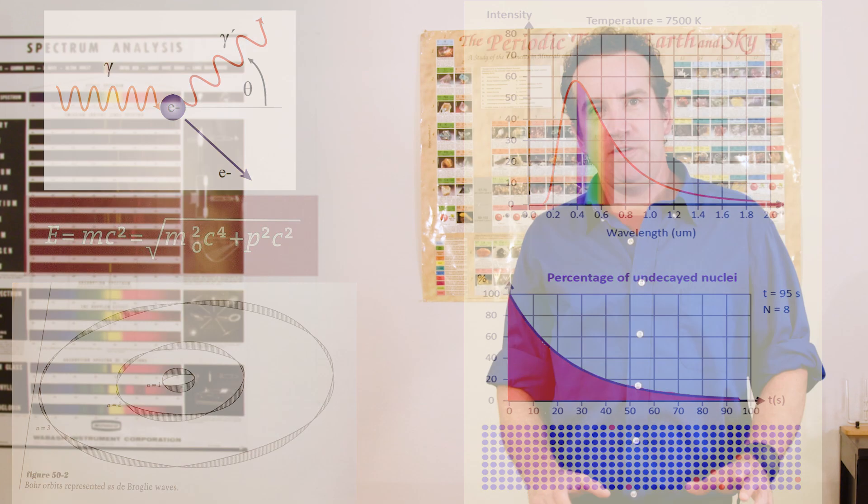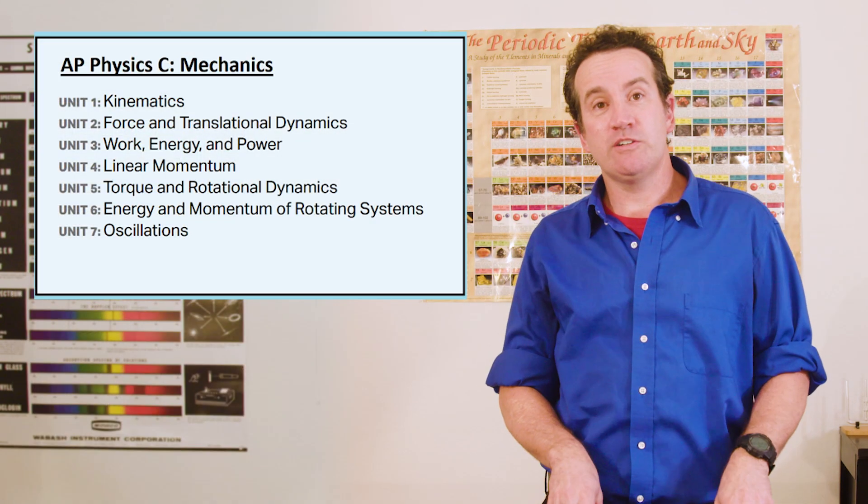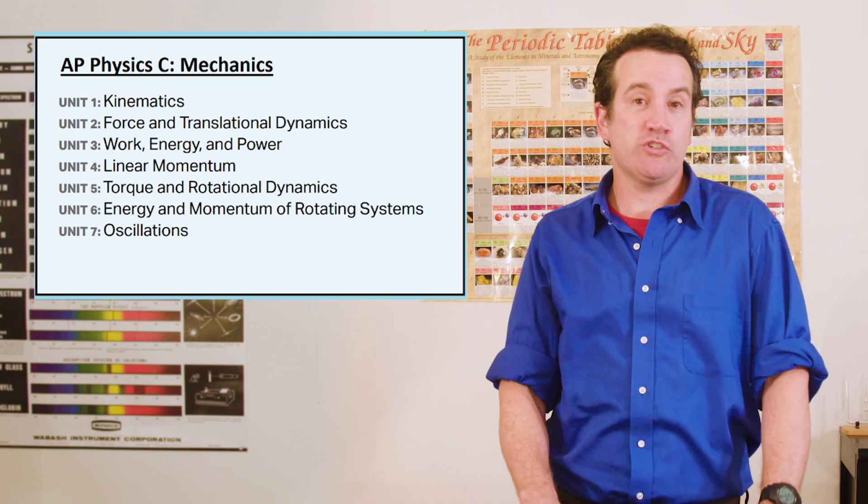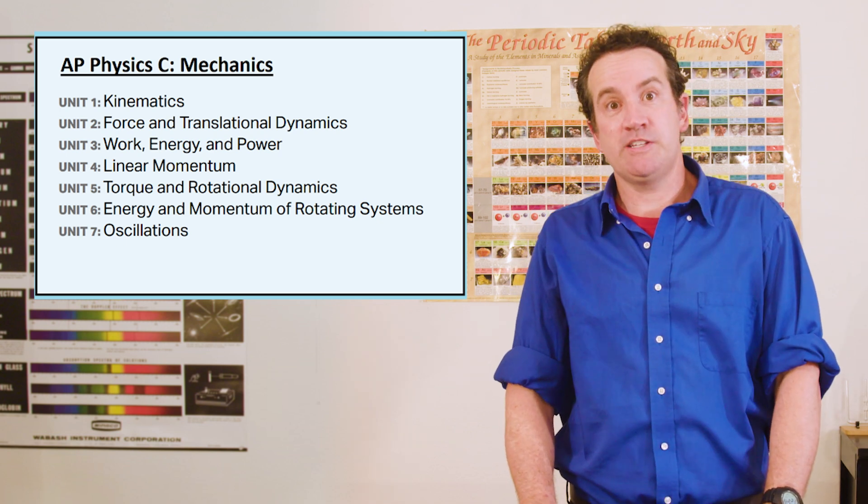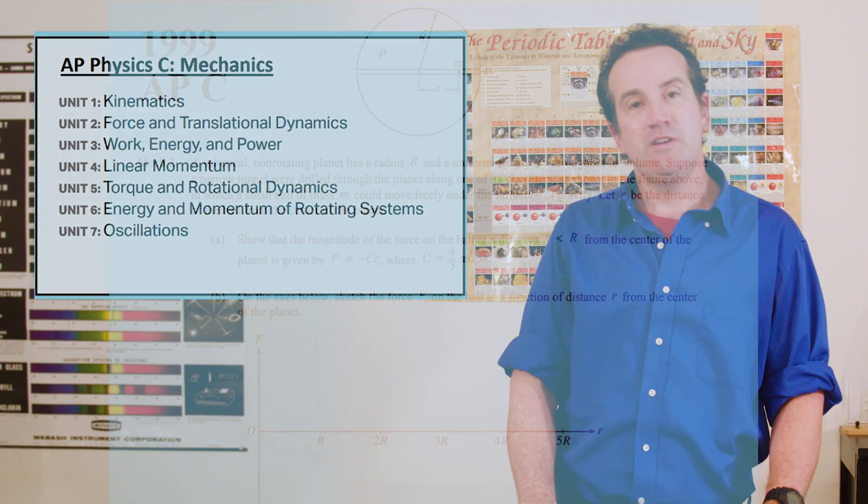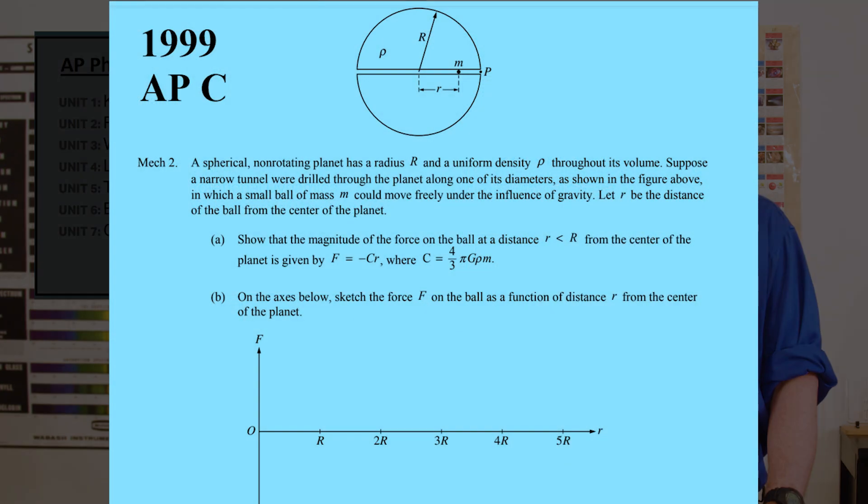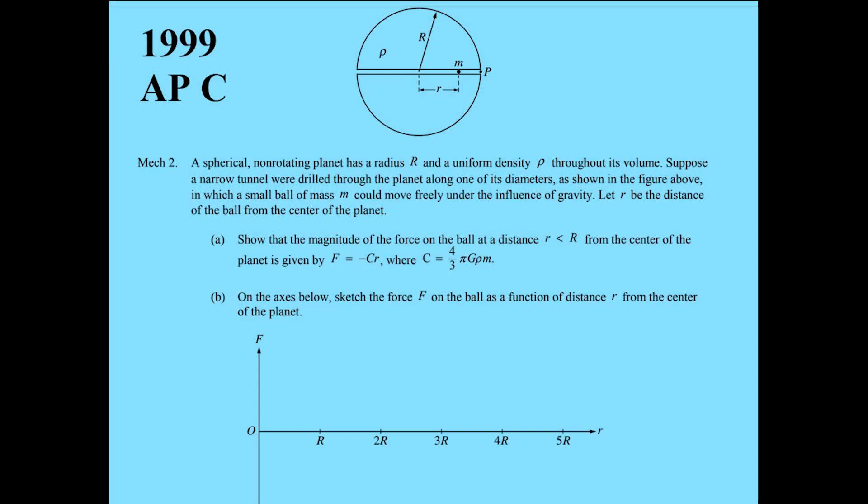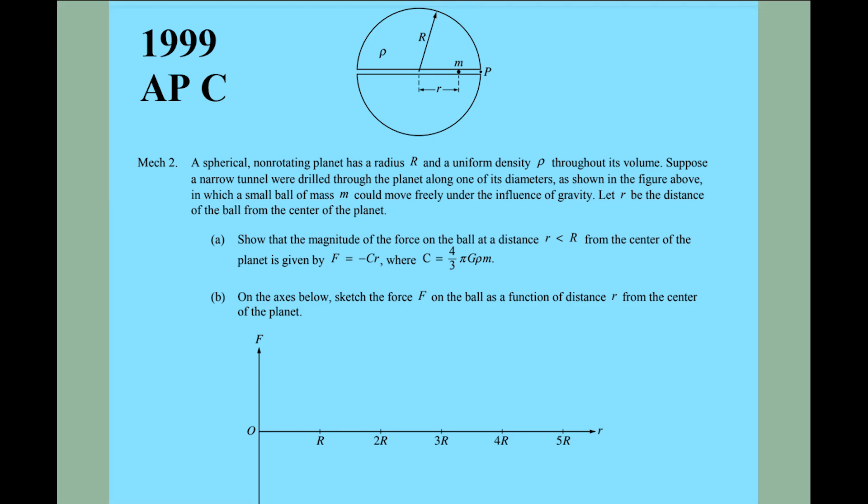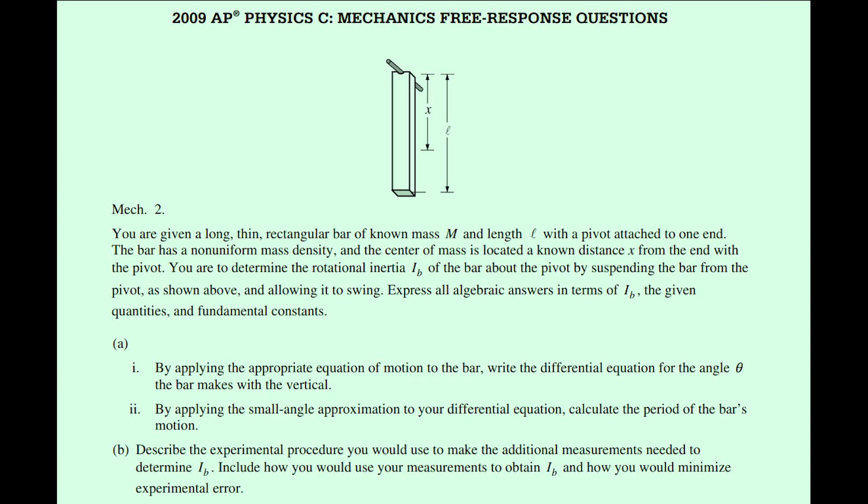Regarding the AP Physics C exams, there's very little content change. The changes are mostly in the length of the exams and the number and restructuring of the questions. However, on the C Mechanics exam, the required content now specifically includes gravity forces within a planet, but that had previously been tested in 1999, for example. And also the physical pendulum, which in the same way we already saw on the 2009 exam.